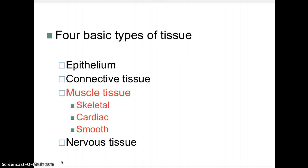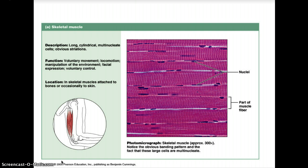Our second-to-last tissue type is muscle tissue. There are three types: skeletal muscle, cardiac muscle, and smooth muscle. Muscular tissue is a contractile tissue composed of cells called muscle fibers. The protein fibers are called actinomyosin, and it is the interaction between actinomyosin that accounts for movement of muscle tissue.